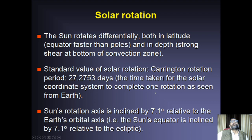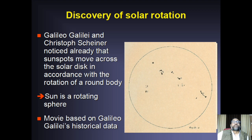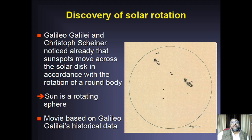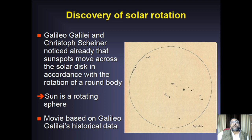The discovery of solar rotation is again due to Galileo Galilei, whose daily hand-drawn images were used to create animations. The sun is a rotating sphere, but it is not a solid body rotation — now we understand that in much more detail.